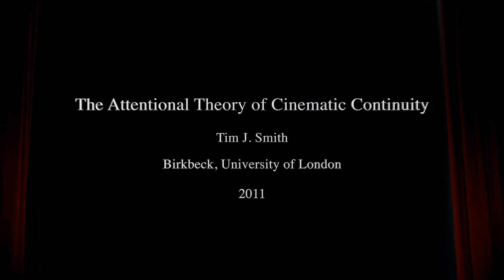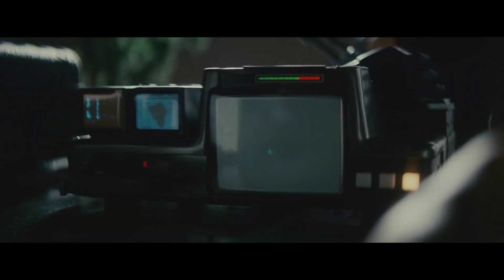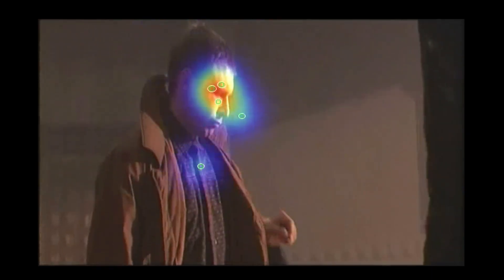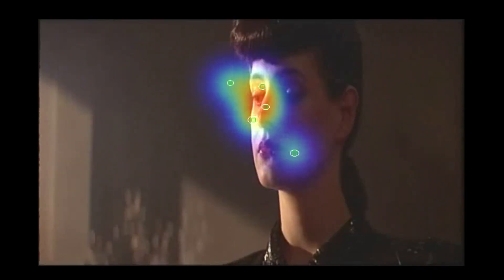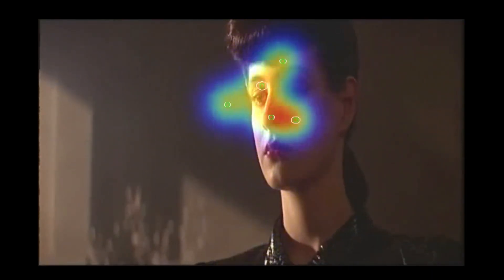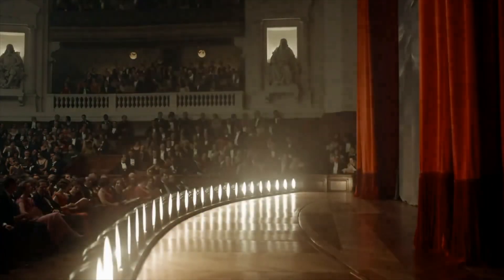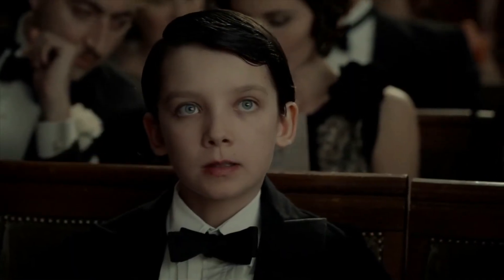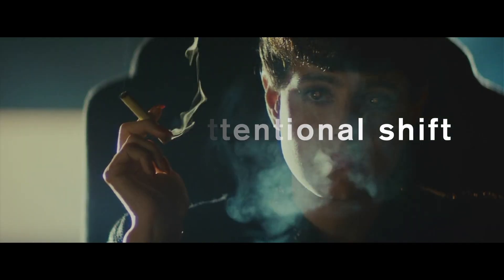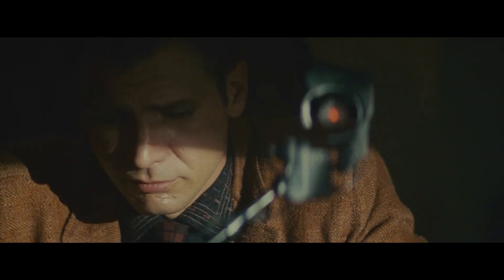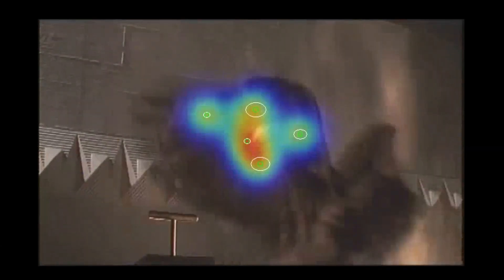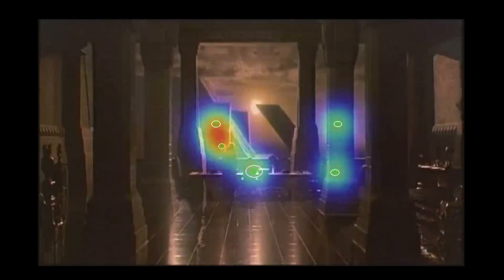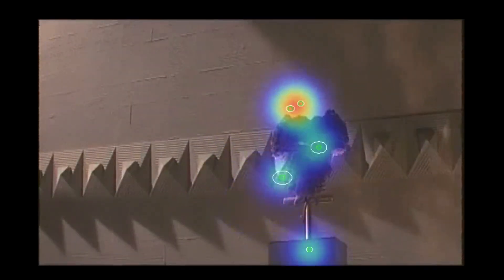For his article 'Attentional Theory of Cinematic Continuity,' Tim J. Smith did eye-tracking experiments and made heat maps to show where eyes are moving as they watch film. From these experiments, Tim found that what feels right in continuity editing is a smooth attentional shift across cuts. But I'm suggesting that while smooth cuts are fine and good to make, editors might sacrifice perfect smoothness to do something more.